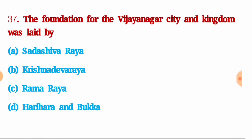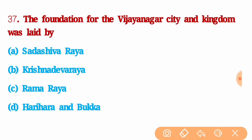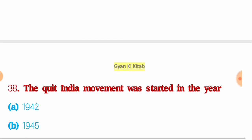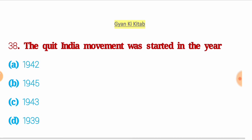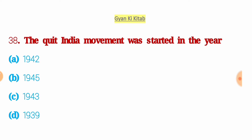Next question: the foundation of the Vijayanagar city and kingdom was laid by — the right answer is option D: Harihara and Bukka. Next question: the Quit India Movement was started in the year — the right answer is option A: 1942.